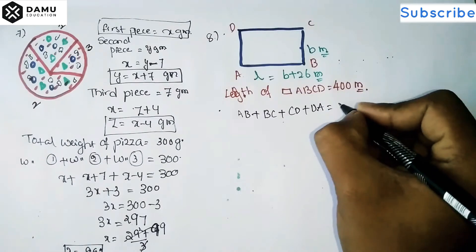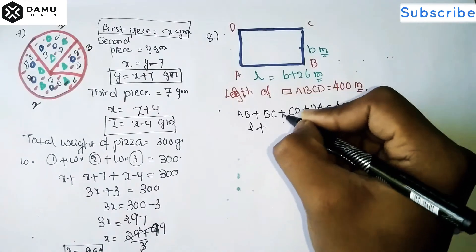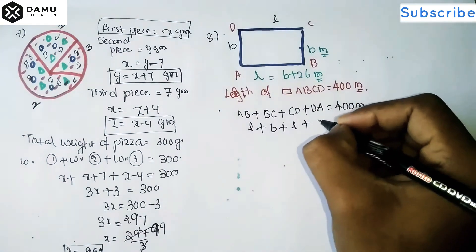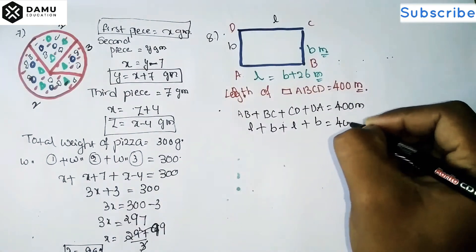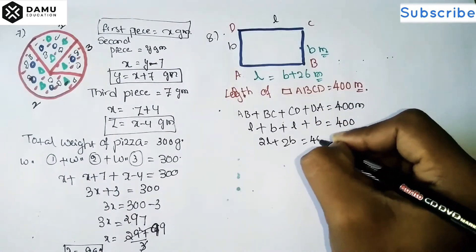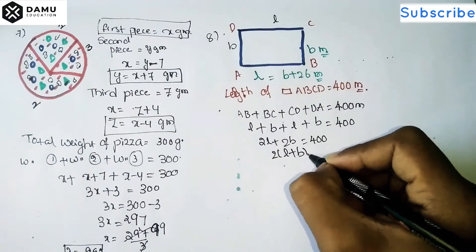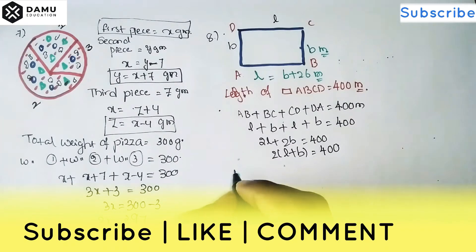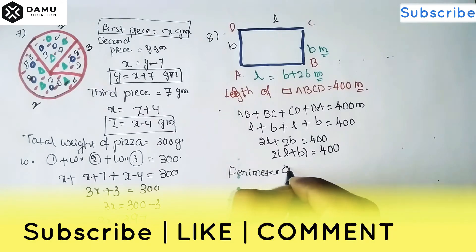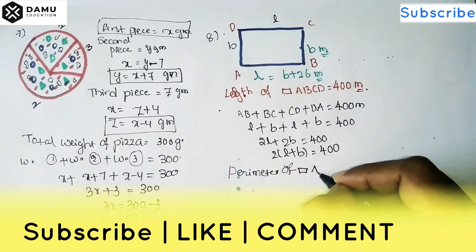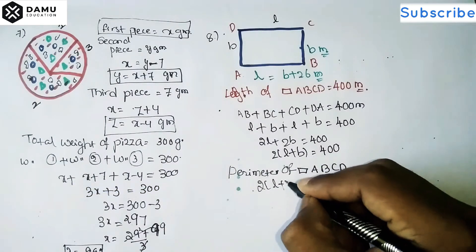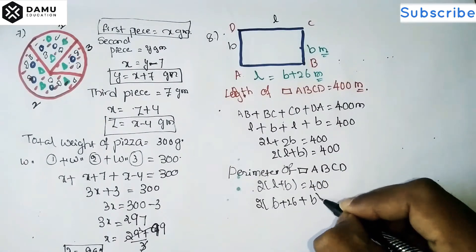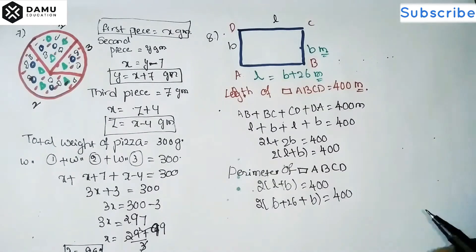The perimeter means the sum of distances AB plus BC plus CD plus DA equals 400 meters. AB is length, BC is breadth, CD is length, and DA is breadth — because opposite sides are equal in a rectangle. So 2l plus 2b equals 400, which means 2 into (l plus b) equals 400. Since l equals b plus 26, we substitute: 2 into (b plus 26 plus b) equals 400.